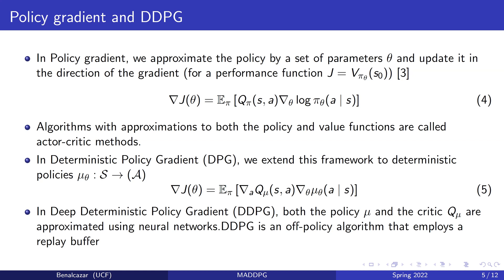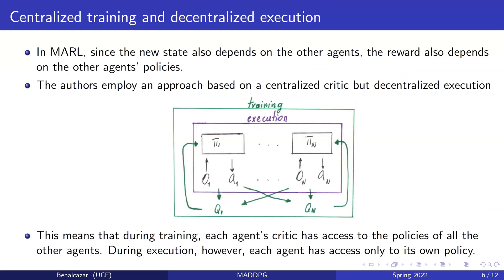In deterministic policy gradient, we expand this notion to deterministic policies, where the mapping is directly from the state space to an action space — the probability collapses to one. When that happens, the gradient becomes the expected value of the gradient of the Q function times the gradient of the deterministic policy. In Deep Deterministic Policy Gradient (DDPG), both the deterministic policy mu and the critic Q are approximated using neural networks. This is an off-policy algorithm that employs a replay buffer — a memory space where transitions are stored and sampled to avoid correlations.